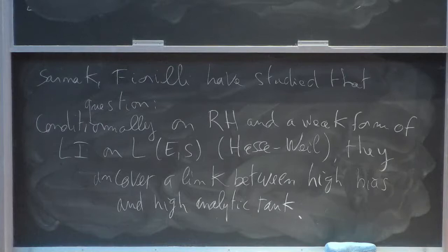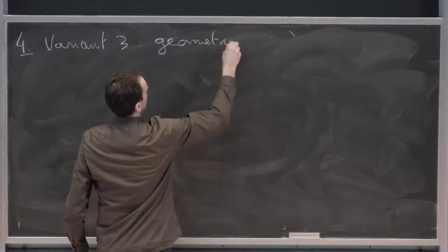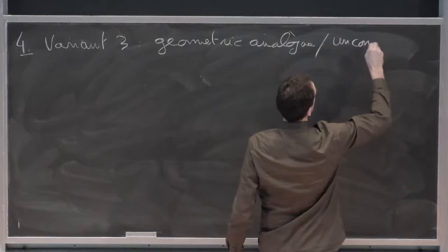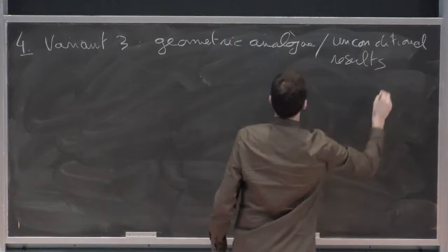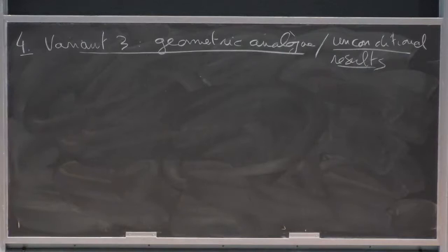So the next, probably number four, variant is geometric analog slash unconditional results. That follows the philosophy that Jordan Ellenberg told us about at the beginning of the conference. So working over Q or in the number field setting, it might be fruitful to consider the geometric counterpart, which is analogs over function fields. And in our case here, things are much easier in this geometric setting.